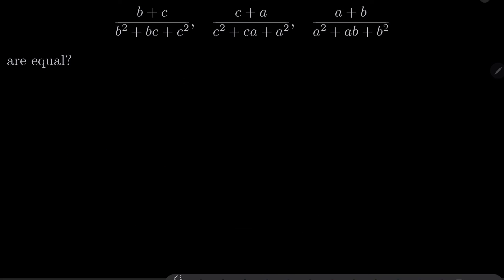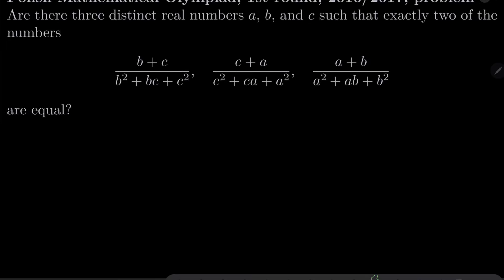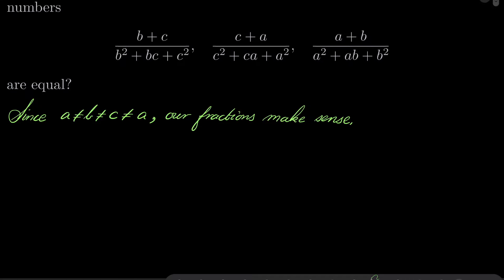All right, so maybe it should be obvious, but let's write that since a is not equal to b, b is not equal to c and c is not equal to a, our fractions actually make sense. What do I mean by that? I mean that the denominators are not zero. Why is that? Because b² + bc + c², by using the quadratic formula, it can be pretty easy to see that this is zero only when both b and c are zero, but they cannot both be zero because b and c are different.